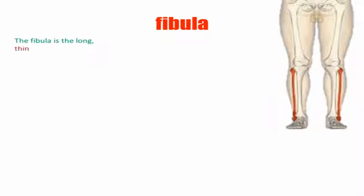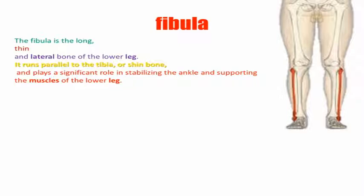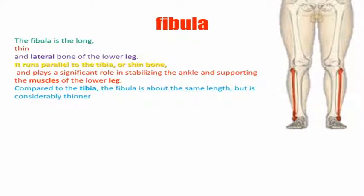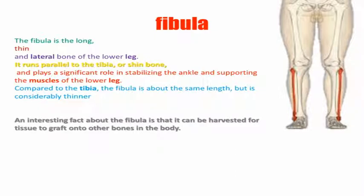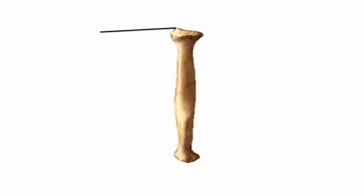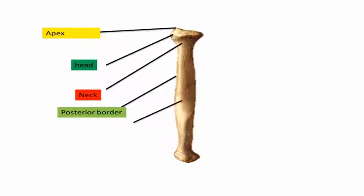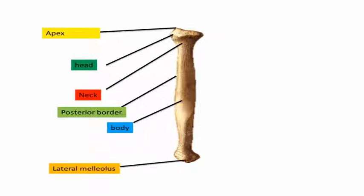The fibula is the long, thin, and lateral bone of the lower leg, running parallel to the tibia. It plays a significant role in stabilizing the ankle and supporting the muscles of the lower limb. An interesting fact is that the fibula can be harvested for tissue grafts onto other bones in the body, as it bears so little weight that it has more mass than needed to support the leg. Its landmarks include the apex, the head, the neck, the shaft with its posterior border, the body, the lateral malleolus, and the anterior and lateral borders.